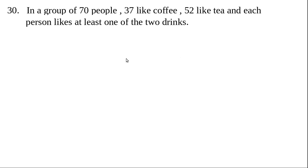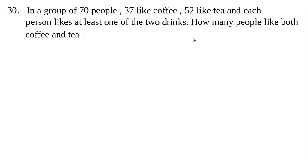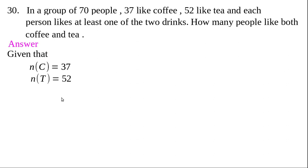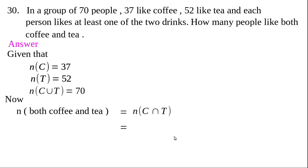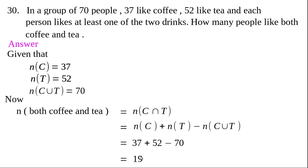Question 30: In a group of 70 people, 37 like coffee, 52 like tea, and each person likes at least one of the two drinks. Find the number who take both. The term 'at least one' represents union, so n(C∪T) = 70. Given n(C) = 37 and n(T) = 52, use the formula n(C∩T) = n(C) + n(T) - n(C∪T) = 37 + 52 - 70 = 19.